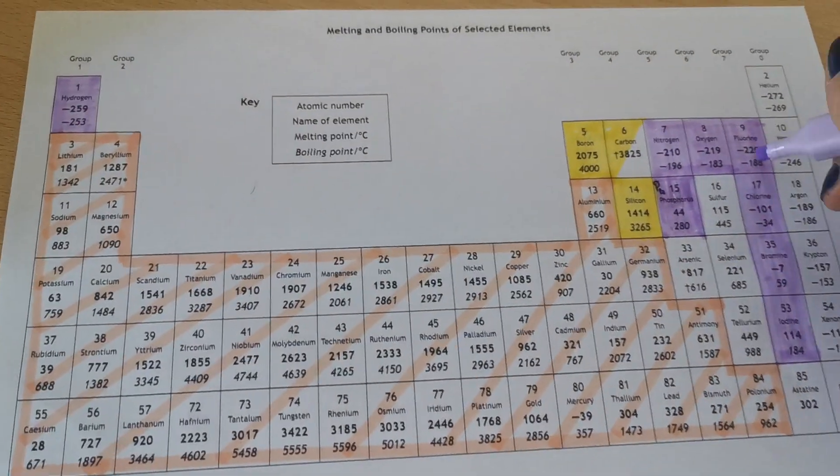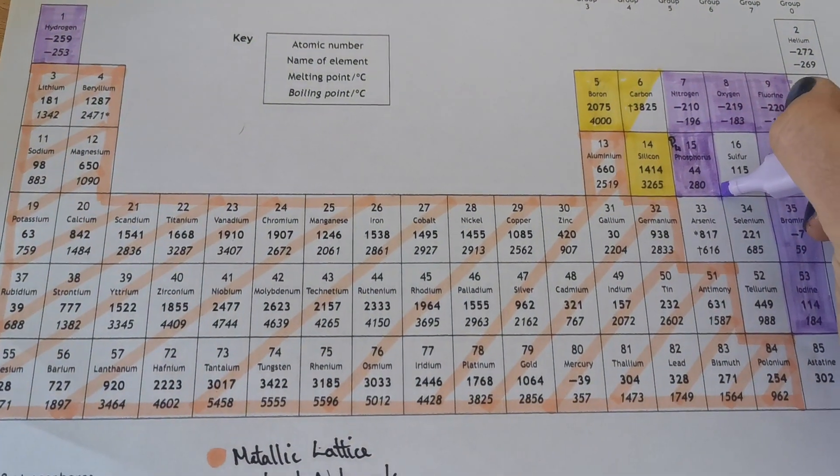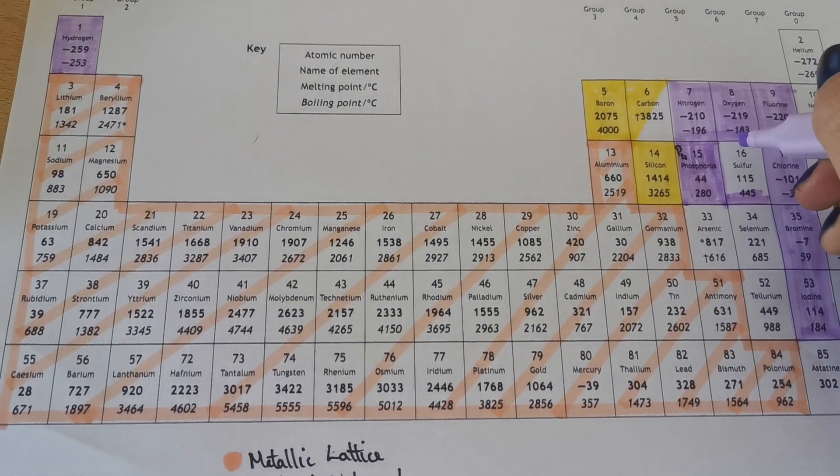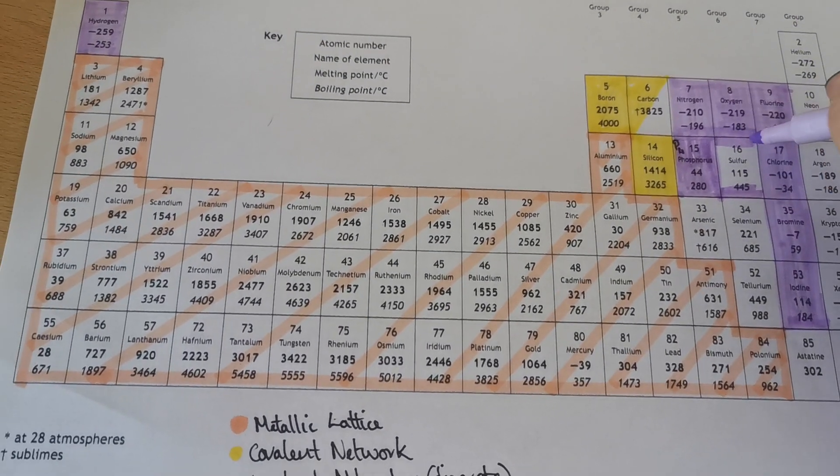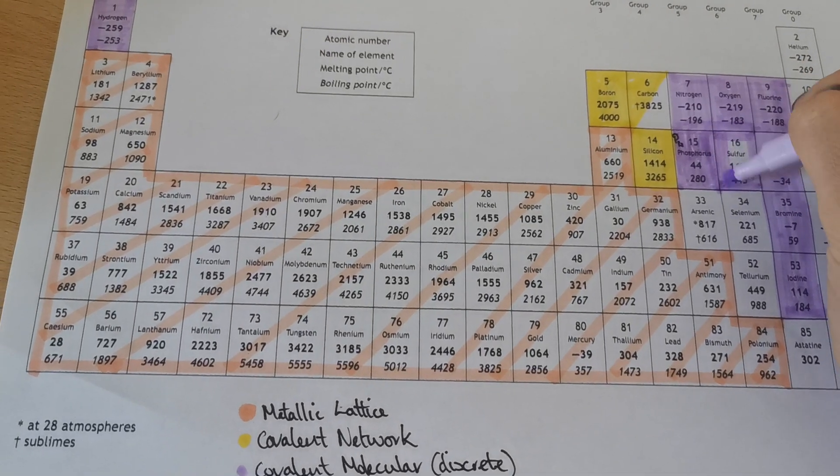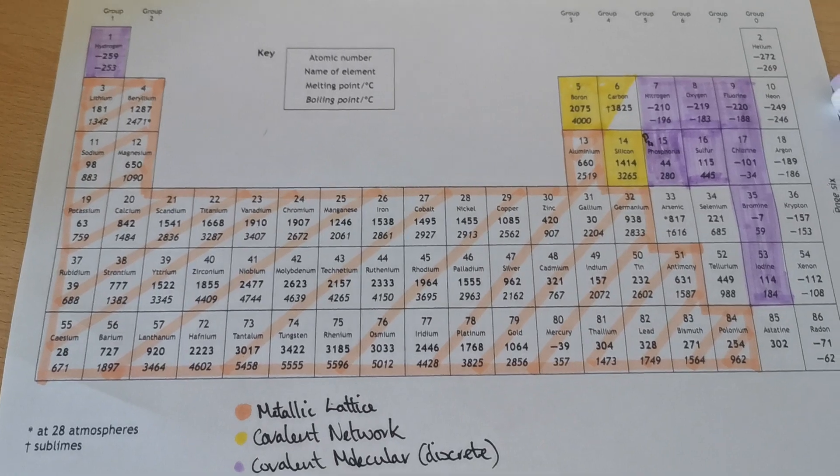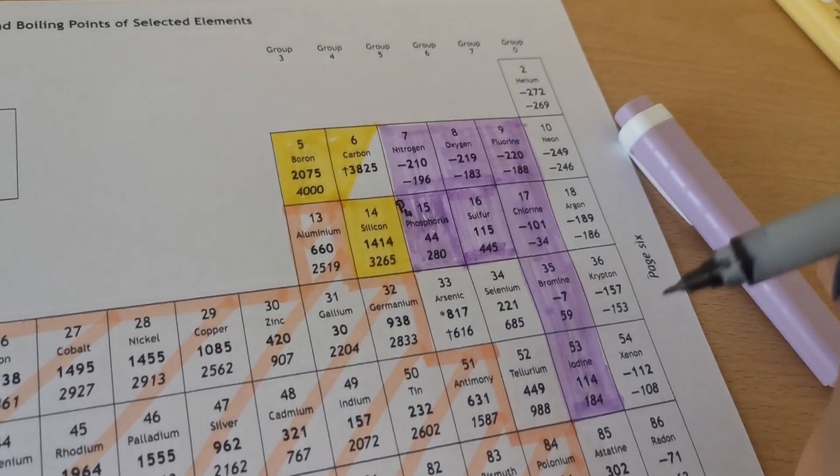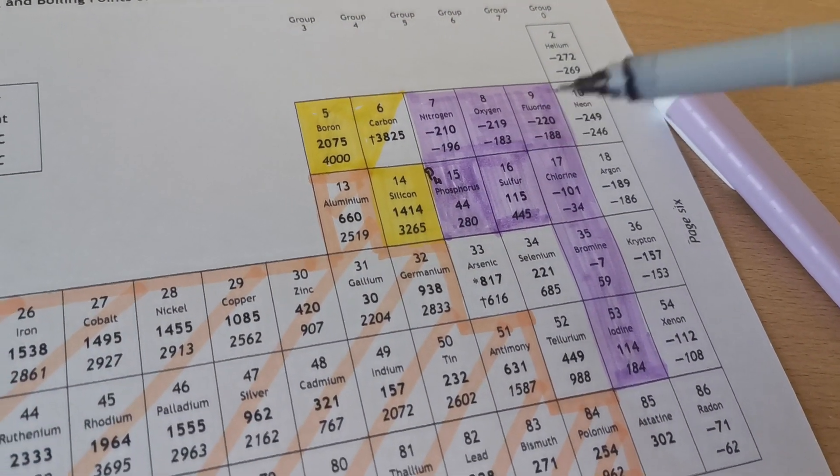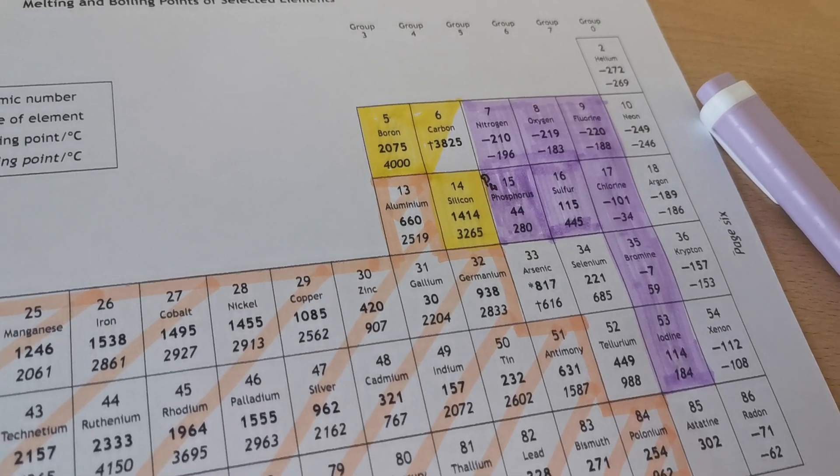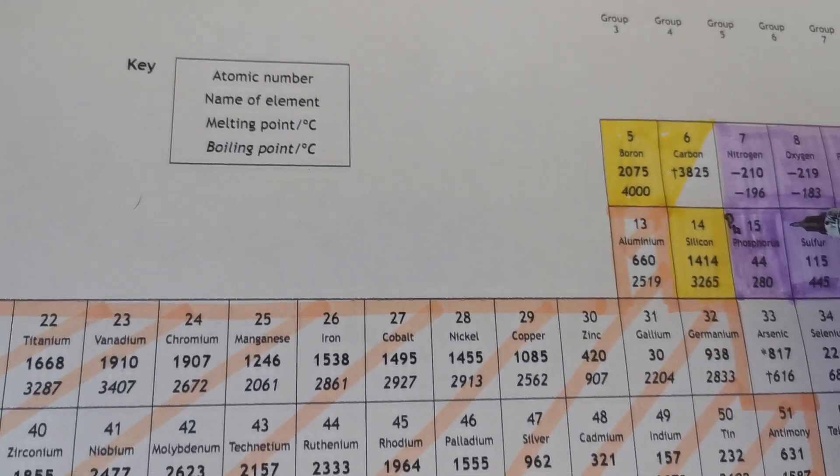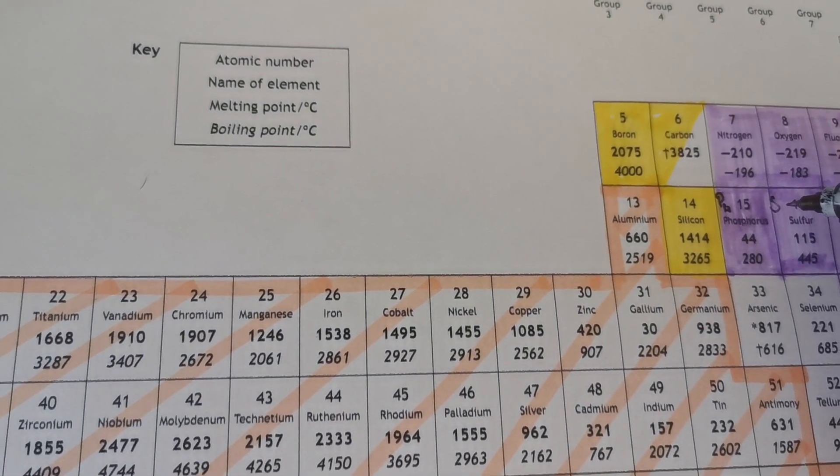The next one that's also a covalent molecule is sulfur. Sulfur exists as S8, which means there are eight sulfur atoms joined together. The sulfur atoms, eight of them are joined in a big ring. For the phosphorus, it's joined kind of like in a triangle. I'll upload some pictures for you to see. So again, I'm just going to write in here S8.